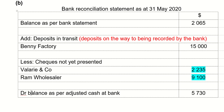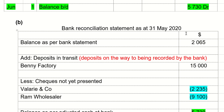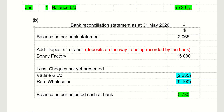Finally, after you add and deduct all the numbers, your final balance should be the same as your cash at bank balance of 5,730. These two numbers will match, and that's how you know your cash at bank has been correctly recorded. All the best, everyone!